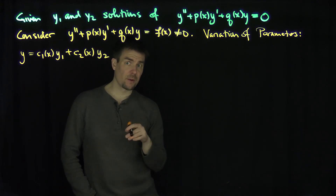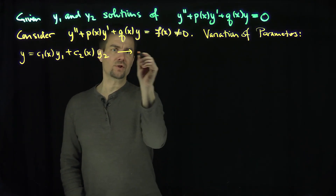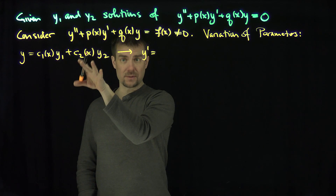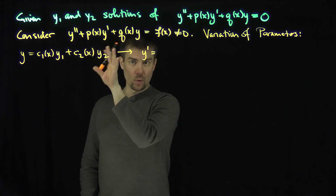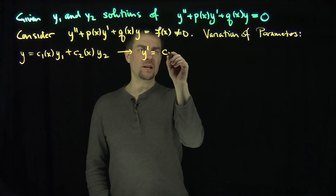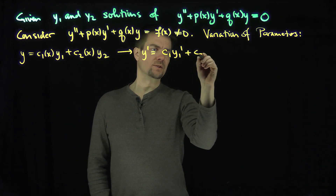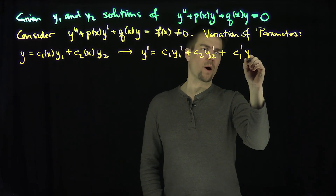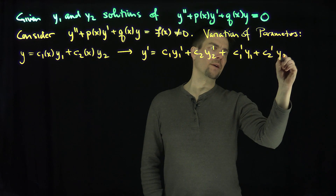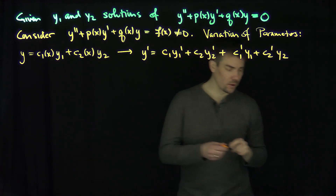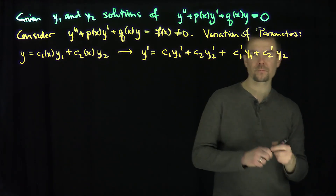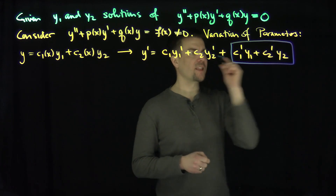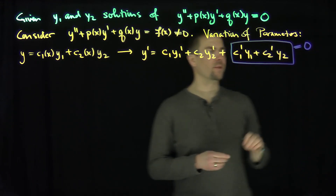The first step in variation of parameters is to differentiate. When we differentiate, y prime equals c1 y1 prime plus c2 y2 prime plus c1 prime y1 plus c2 prime y2. The Lagrange method for this problem states: take the terms with first derivatives of c and set them equal to zero. That makes our calculation for y prime a lot easier.